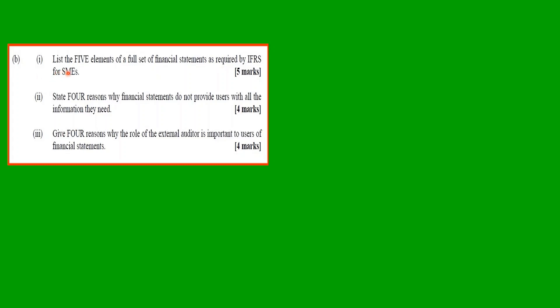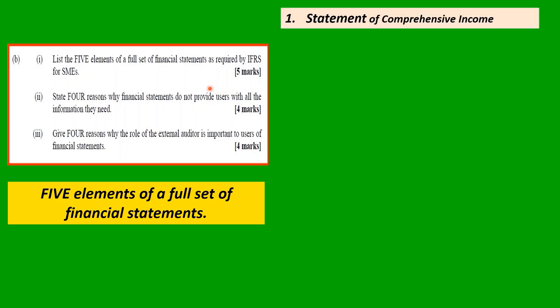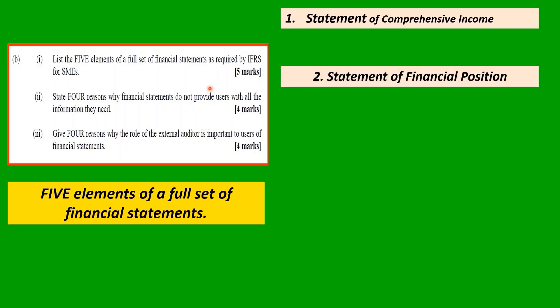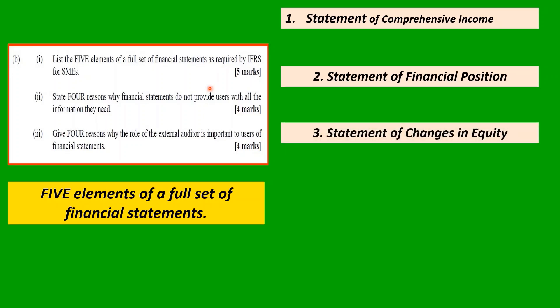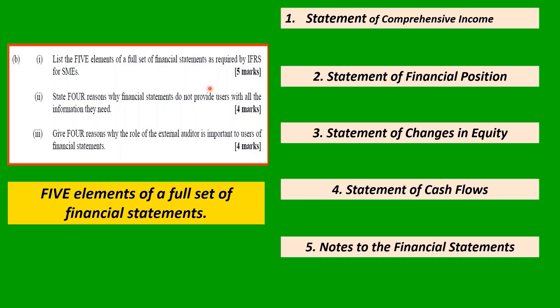Part B: List the five elements of a full set of financial statements as required by IFRS for SMEs. The five elements are: the statement of comprehensive income (also known as the income statement), the statement of financial position (also known as the balance sheet), the statement of changes in equity, the statement of cash flows (also known as the cash flow statement), and the notes to the financial statements. All must be present for a full set of financial statements as required by IFRS for SMEs.